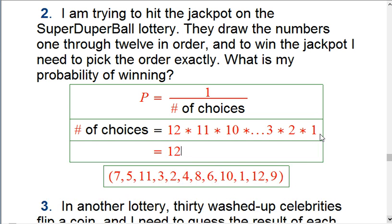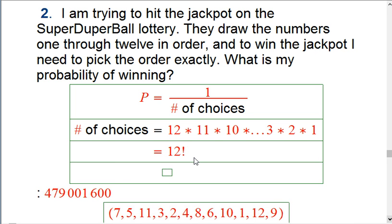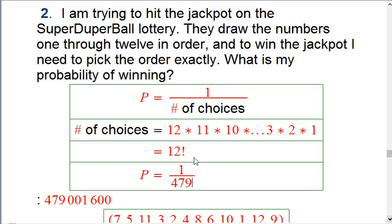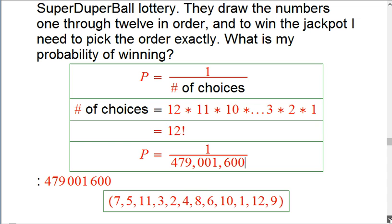Well, there's a notation for that. That's 12 factorial. And what is that? That's 479 million. So the odds, or the probability rather, of winning is going to be 1 over 479 million.